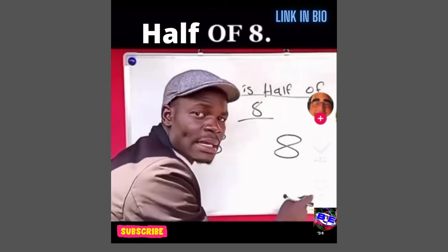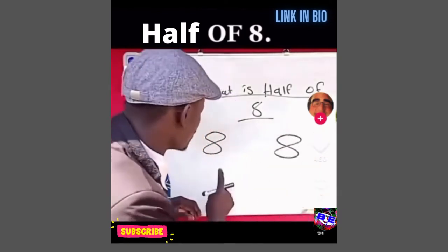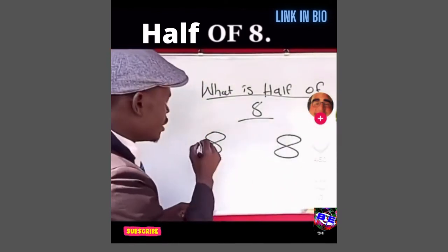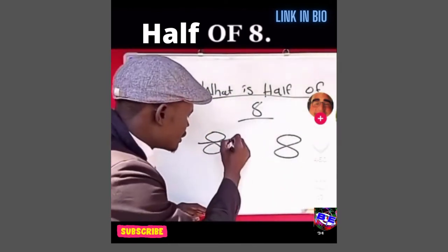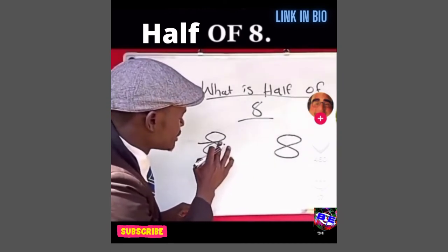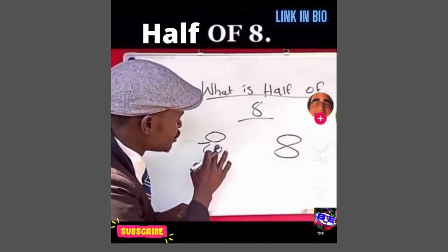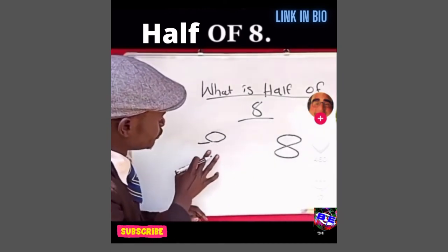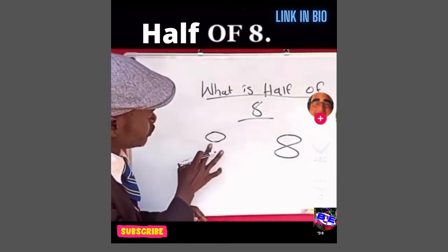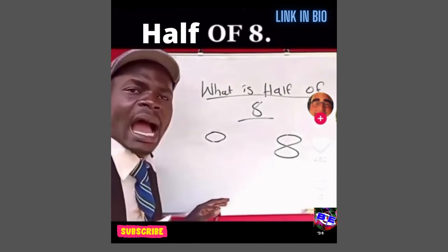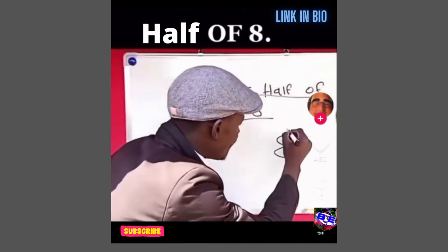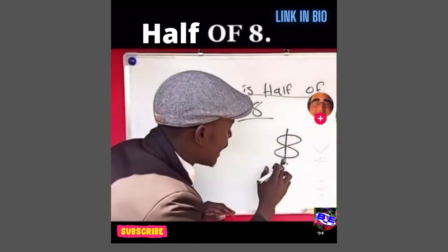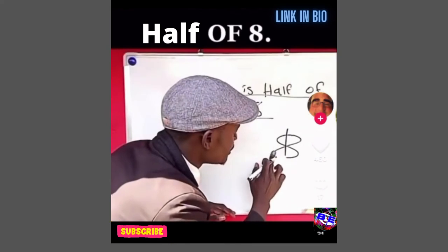The first way: if we divide it horizontally, the half of eight is zero. And if we divide it vertically, the half of eight is three.